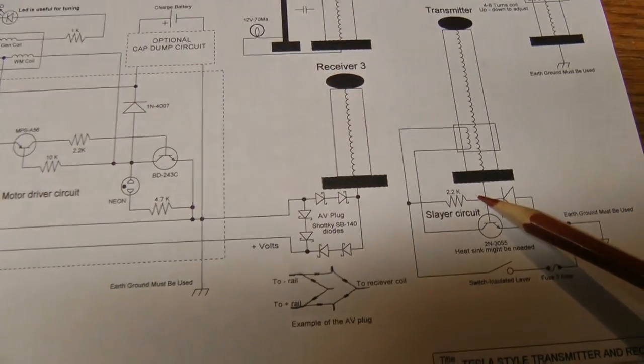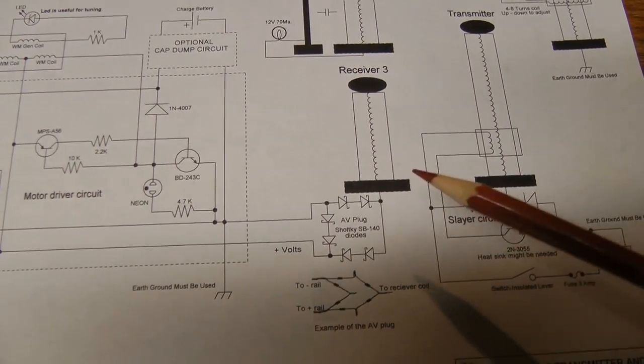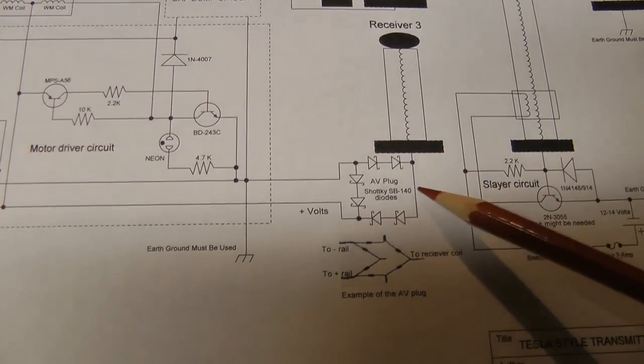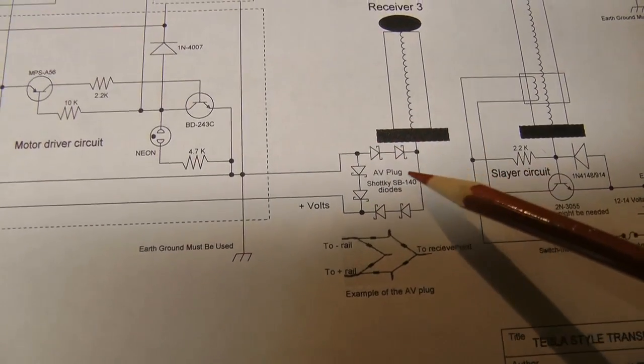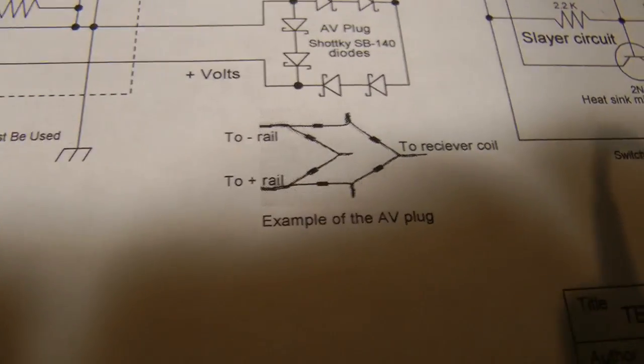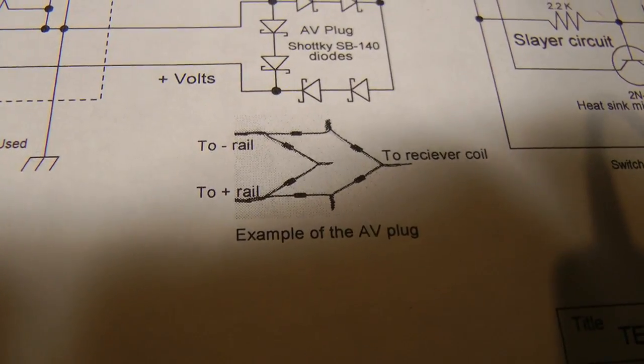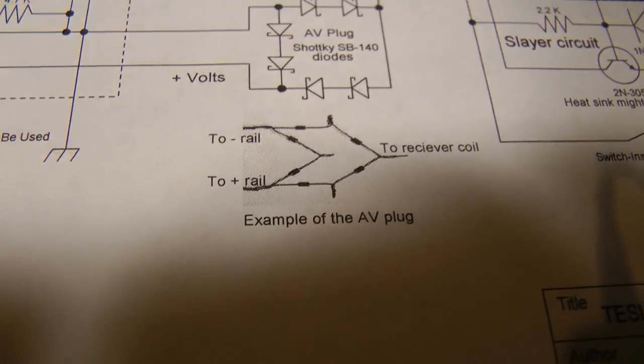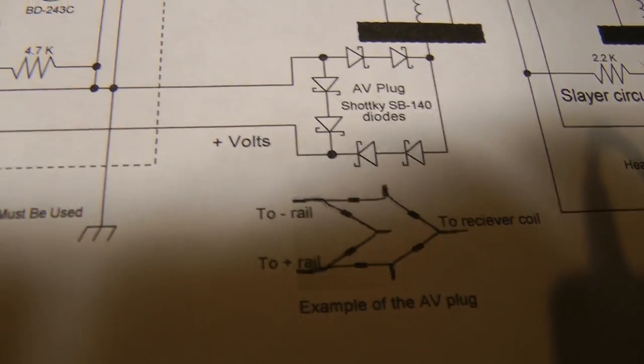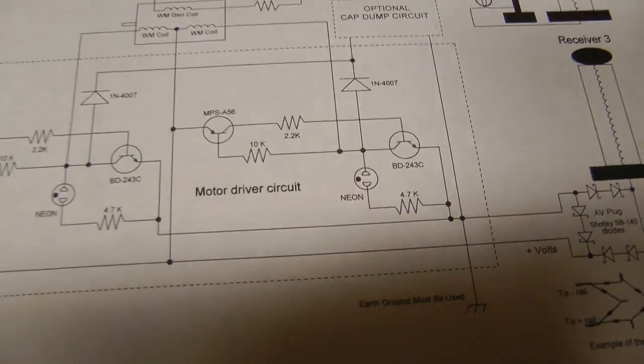Transmitter coil, coils the receiver, and here's the AV plug. And of course that looks something like this when you make it, if you decide to make it that way. And of course then that goes over to circuit, this circuit.